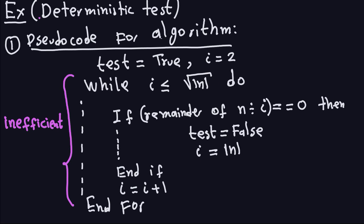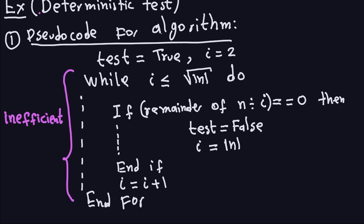We use a while loop: while i is less than or equal to the square root of the absolute value of n. We use the absolute value to also handle negative numbers. Inside the loop, we check if i divides n by computing the remainder of n divided by i. We start i at 2 because 1 always divides n, so there's no need to check it. If the remainder of n divided by i equals 0, then i is a divisor of n.